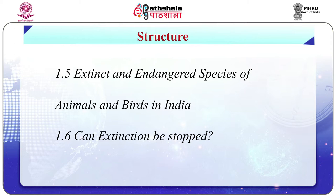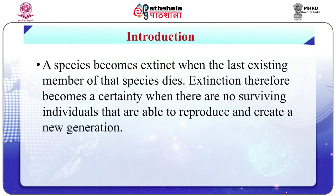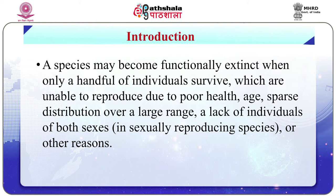A species becomes extinct when the last existing member of that species dies. Extinction becomes a certainty when there are no surviving individuals able to reproduce and create a new generation. A species may become functionally extinct when only a handful of individuals survive, unable to reproduce due to poor health, age, sparse distribution over a large range, or a lack of individuals of both sexes in sexually reproducing species.